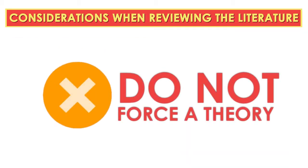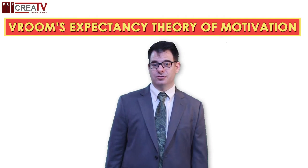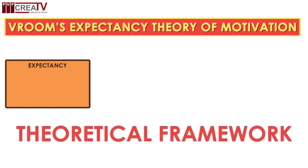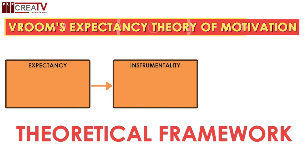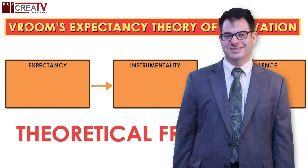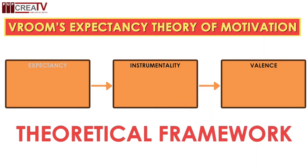In theoretical frameworks, do not force a theory upon a situation. I want to share a brief example to demonstrate how conceptual and theoretical frameworks are closely related. Vroom's expectancy theory refers to level of motivation within organizations. There are three ideas here. Expectancy refers to the idea that more effort will yield better performance. Instrumentality refers to the idea that increased performance will yield a valued outcome. And valence refers to the value placed on the outcome. As you can see, there are three factors that are related: expectancy, instrumentality, and valence.